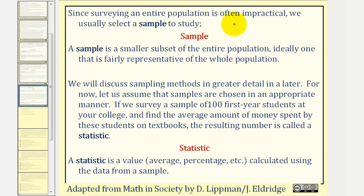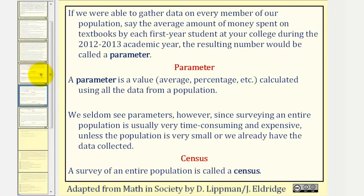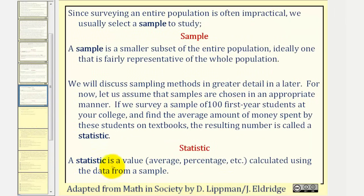Since surveying an entire population is often impractical, we usually select a sample to study. A sample is a smaller subset of the entire population, ideally one that is fairly representative of the whole population. We will discuss sampling methods in greater detail in the next lesson. For now, let's assume the samples are chosen in an appropriate manner. If we survey a sample of 100 first-year students at your college and find the average amount of money spent by these students on textbooks, the resulting number is called a statistic — a value calculated using the data from a sample. So a parameter is a value calculated using all the data from the entire population, and a statistic is a value calculated using the data from a sample of the population.